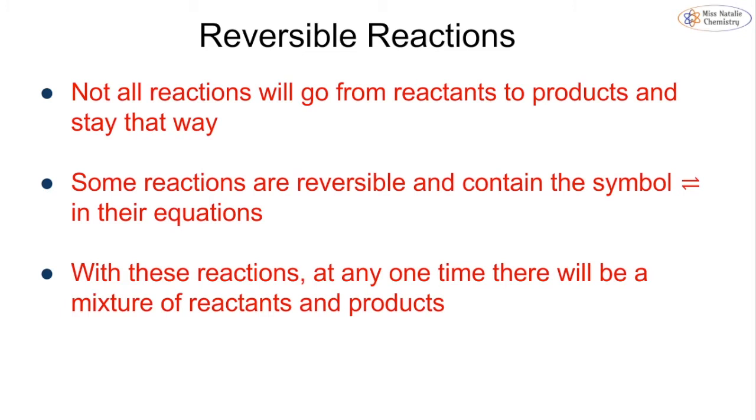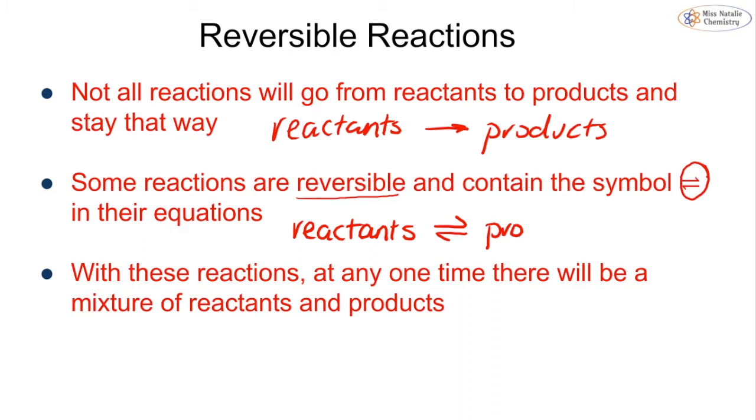In our chemical reactions, what we need to understand is that we do not always go from reactants to 100% products. There are some reactions that can go to the products but can then be reversed to get back to your reactants. We call these reversible reactions. When we're using our equation, we use this symbol - we write reactants, double-headed arrow, and products. That means our reaction can go from reactants to products or products to reactants. Because these can both happen at any one time, if I take a sample of my mixture, I'm going to get a mix of the reactants and products.